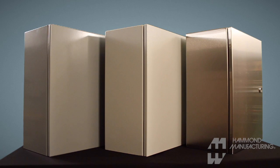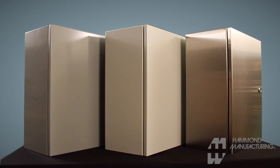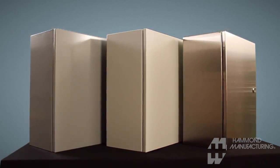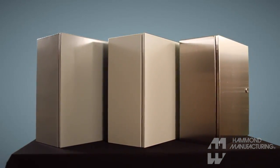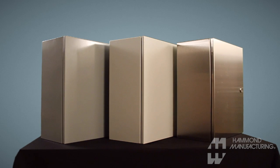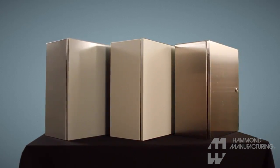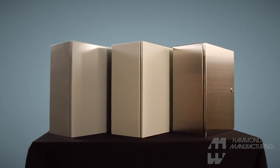The painted Eclipse series is stocked in two standard colors: traditional ANSI 61 gray in a smooth finish and contemporary textured RAL 7035 light gray. Stainless steel versions are offered in material types 304 and 316.